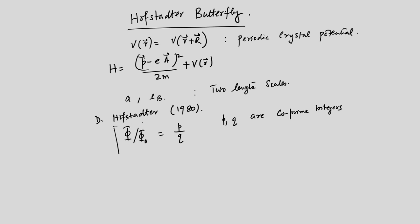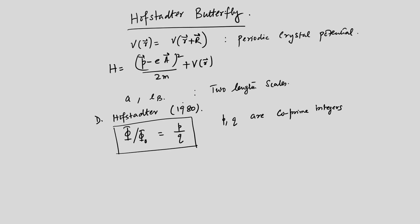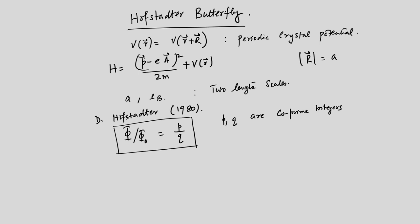This is needed for the butterfly or fractal spectrum to occur. There are two length scales: the lattice constant a, representing the periodicity of the lattice written as R + R, and L_B = √(ℏ/eB), the magnetic length. The ratio of these two determines what kind of spectrum we get, and it turns out this is related to φ/φ₀ being a rational fraction P/Q with P and Q as co-prime integers. Each Bloch band splits into Q sub-bands, and each of those sub-bands is P-fold degenerate.